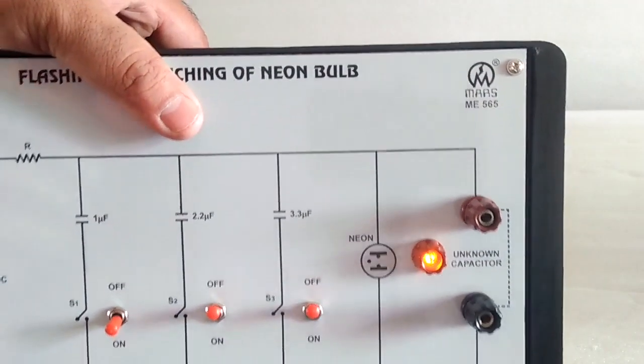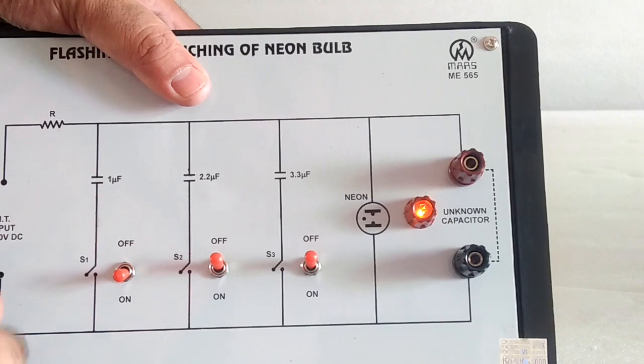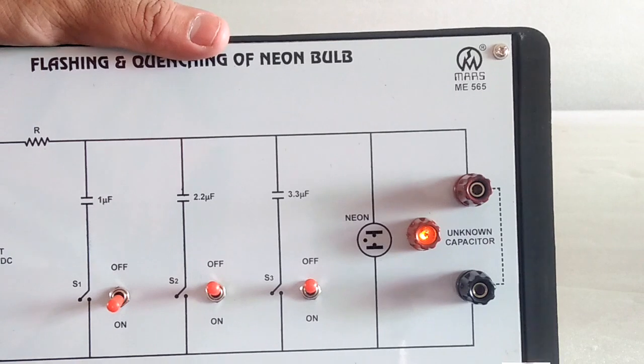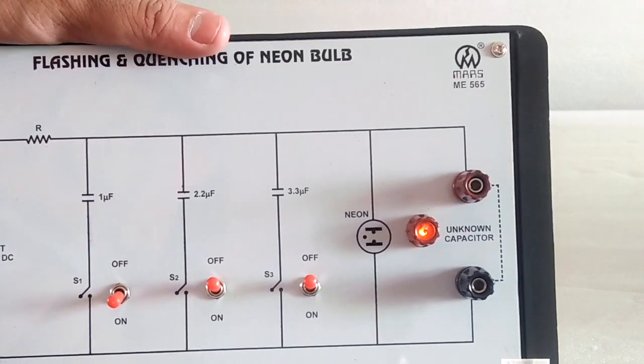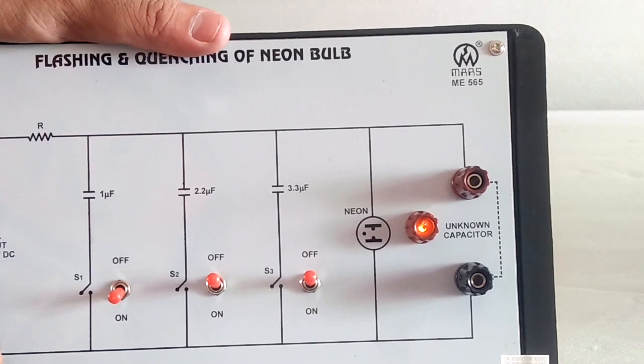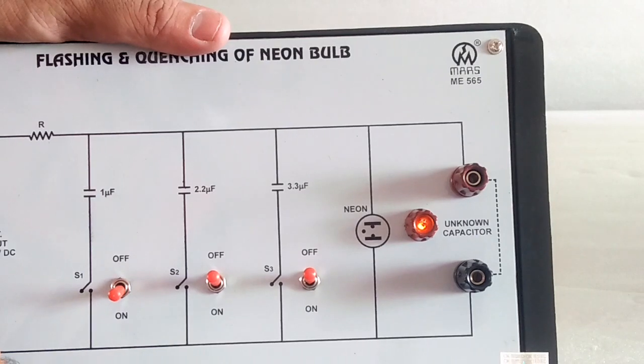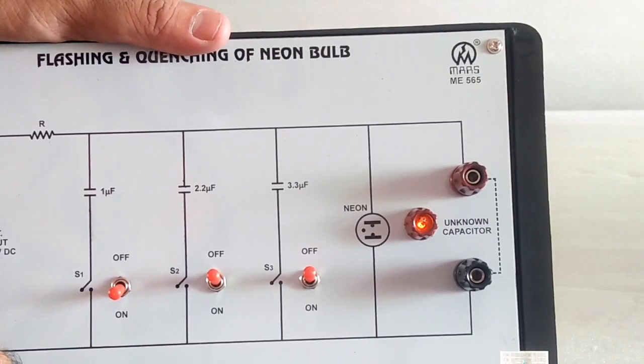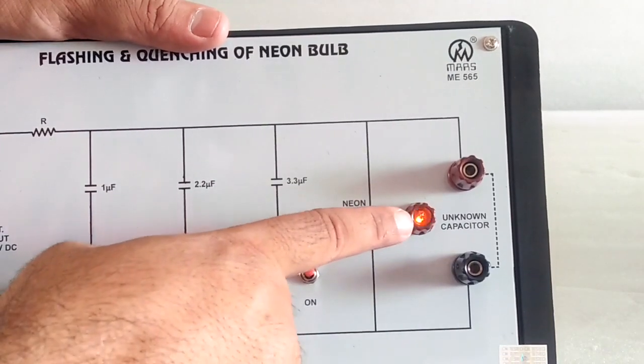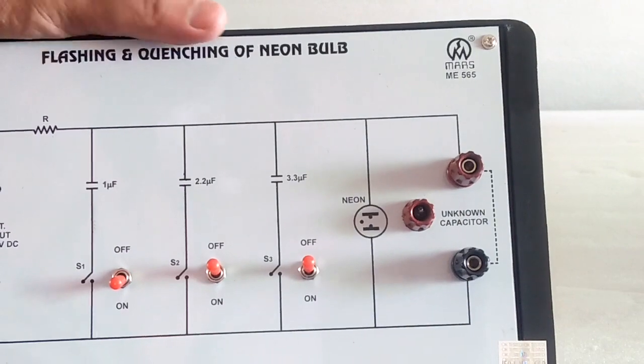And now decrease the potentiometer when the neon bulb starts flashing and quenching. Then record the time for 20 flashes here. Now count the flashes. Here we get the flash and quenching of the neon bulb.